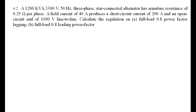Now we take a numerical example. It is a 1200 kVA, 3300 volt, star-connected alternator. Armature resistance Ra = 0.25 Ω. For a field current of 40 amperes, the short circuit current is 200 amperes, and for the same field current the open circuit voltage is 1100 volts (line to line). We are asked to calculate the regulation at 0.8 power factor lagging as well as leading power factor.